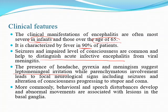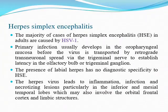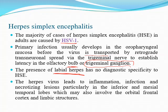Behavioral and speech disturbances commonly develop, and abnormal movements are associated with lesions in the basal ganglia. Herpes simplex encephalitis — the majority caused by HSV-1 — has primary infection in the oropharyngeal mucosa. The virus is transported via retrograde transneural spread via the trigeminal or olfactory system to either the olfactory bulb or trigeminal ganglion. It particularly infects the inferior and mesial temporal lobes and may also involve the orbitofrontal cortex and limbic structures, causing necrotizing lesions.